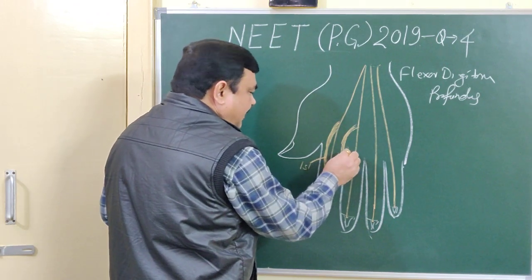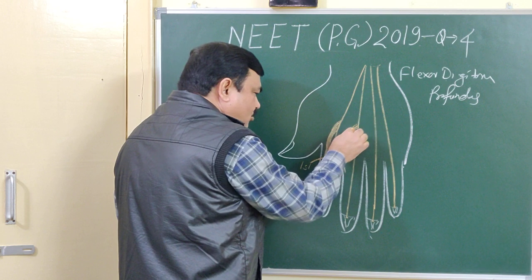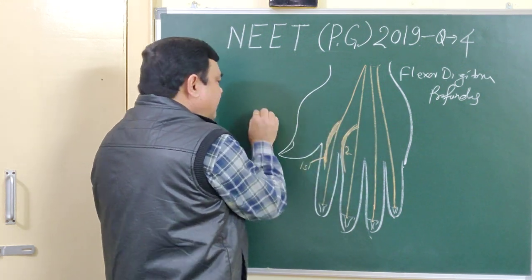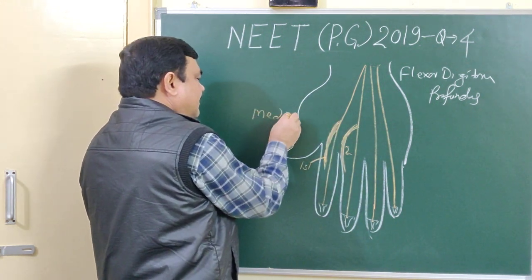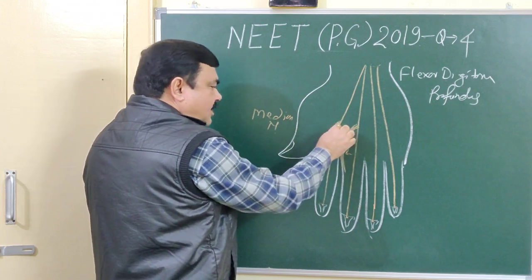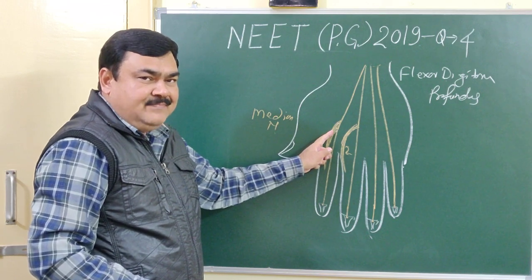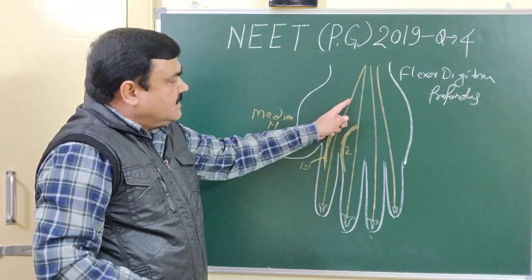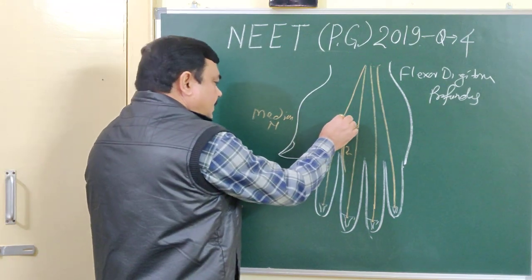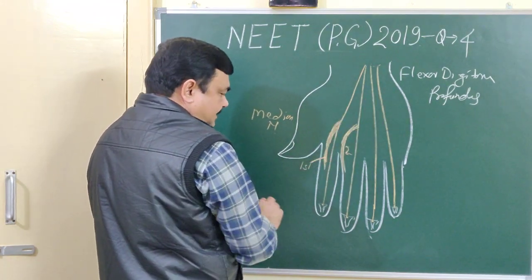This is the second lumbrical. These are unipennate. The first and second are unipennate and supplied by the median nerve. These are unipennate and arise from the radial side — the lateral side of the first and second tendon of the flexor digitorum profundus.